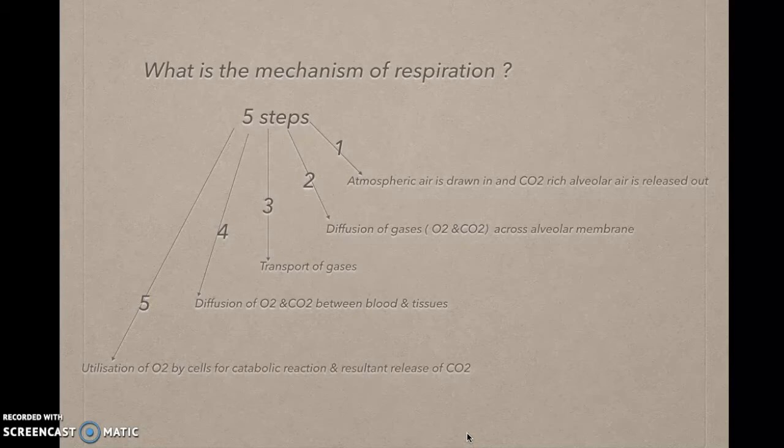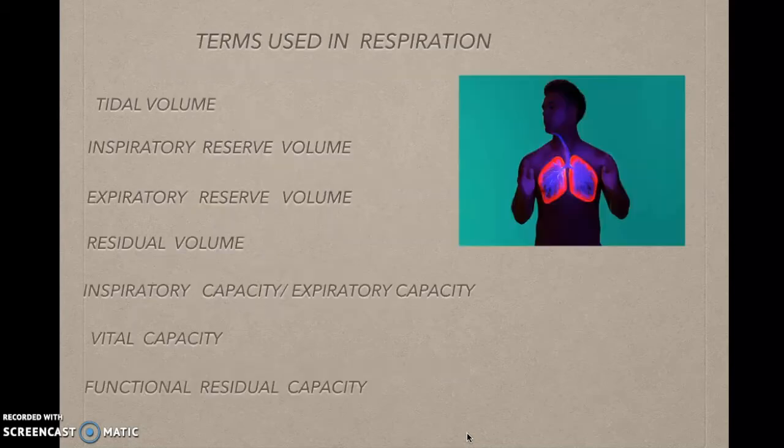Oxygen moves from blood to the tissue and carbon dioxide moves from tissue to the blood. The fifth step is the utilization of oxygen by cells for catabolic reactions and the resultant release of carbon dioxide. When oxygen moves from the blood to the cell, the cell uses the oxygen for catabolic reactions and releases carbon dioxide.